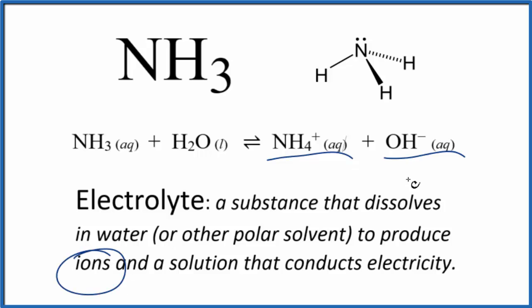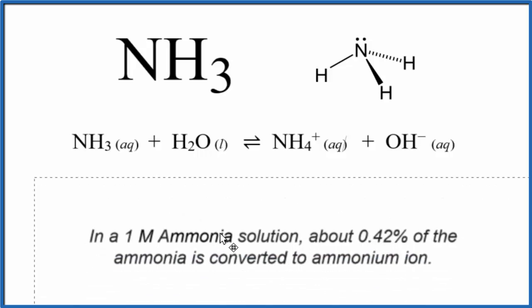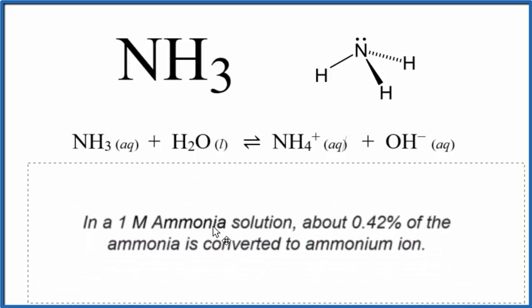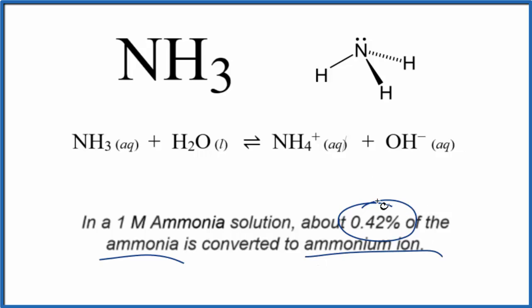So we have our ions and it dissolves, so we know it's an electrolyte — but how much does it dissolve? That'll influence how much it conducts electricity. In a one molar solution of ammonia — one mole of NH3 in one liter of water — only 0.42% of the ammonia converts into the ammonium ion and hydroxide ion. Very little actually dissociates and forms ions.